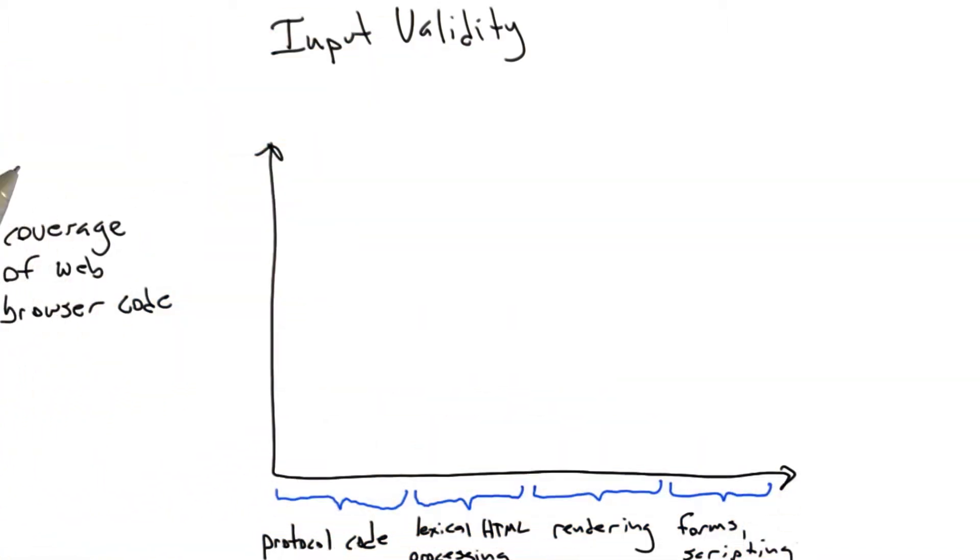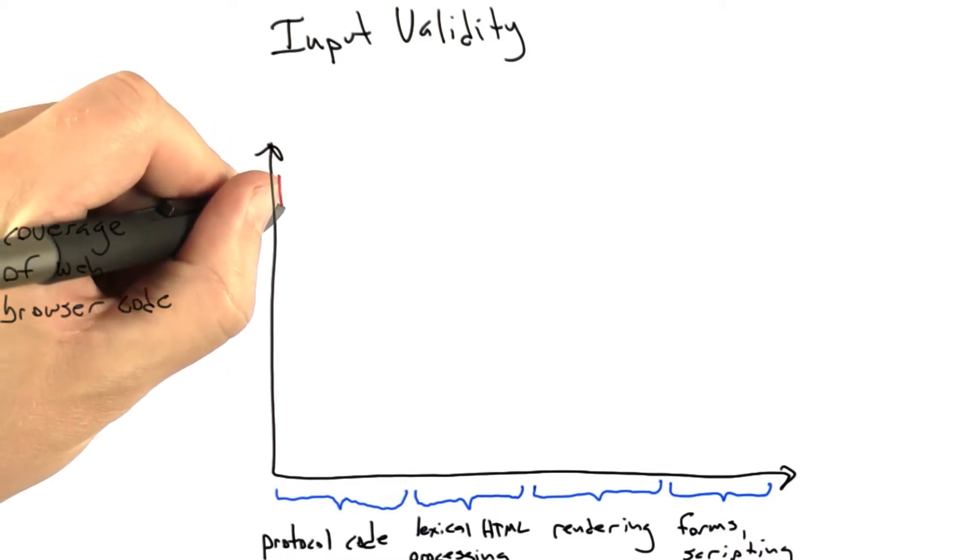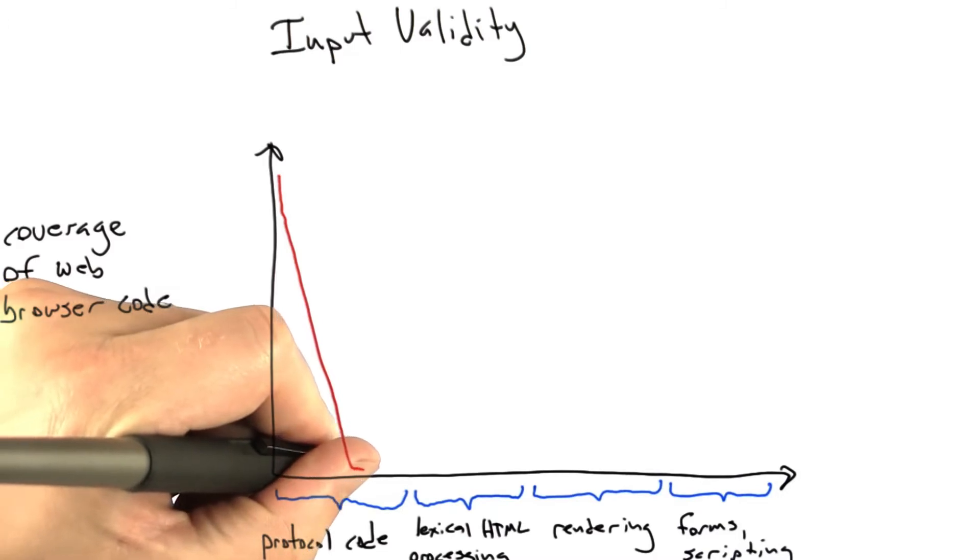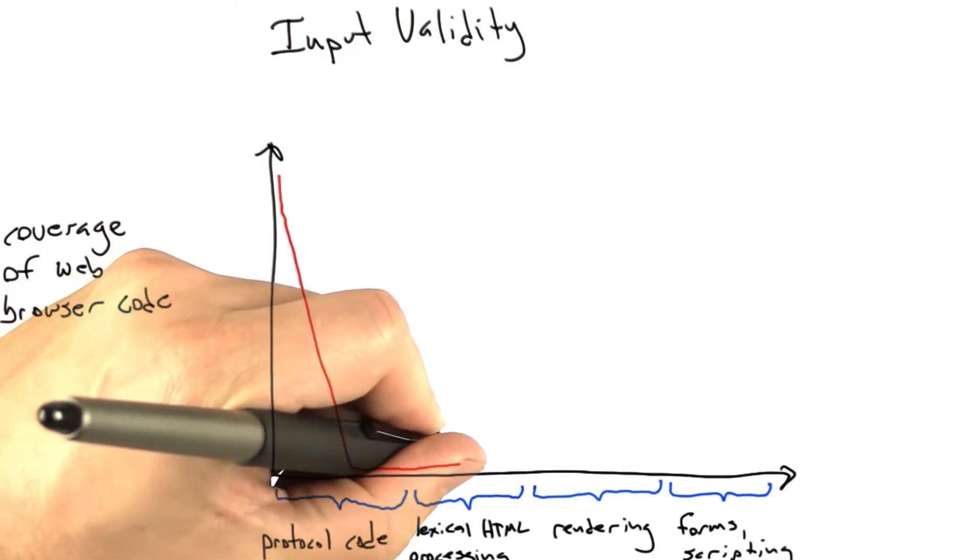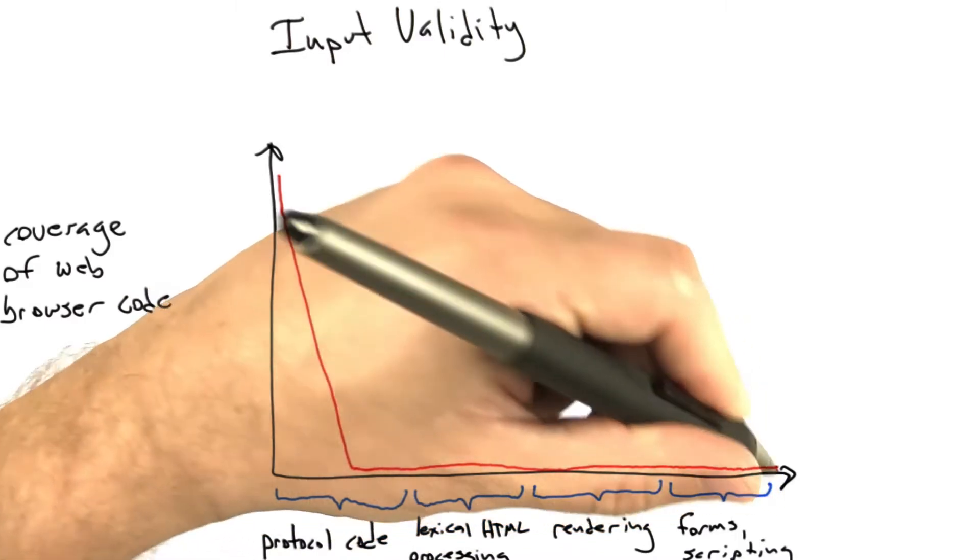Okay, so we have this graph. Now let's see what happens when we fuzz the web browser using totally random bits. Well, what's going to most likely happen is most of those bits that come in are not even going to be valid HTTP responses. So we're going to get coverage that rapidly drops off.